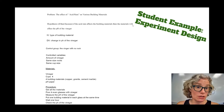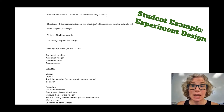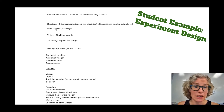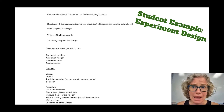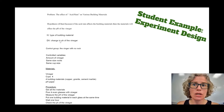Here's a student example: they wanted to see the effect of acid rain on various building materials. Their hypothesis was: if the acid rain affects the building materials, then the materials will affect the pH of the vinegar — basically the pH will change after you place the building material in the vinegar, if the material is going to be eroded by the acid. The independent variable — the thing being changed — is the type of building material, and the dependent variable is the pH.